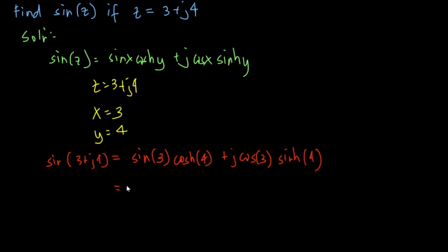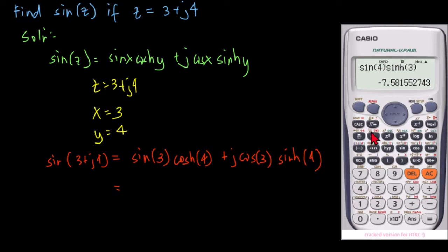From this point we will be using our calculator. So let's just use our calculator. Set our calculator into radians, so that will be sin 3 hyperbolic cos 4. So this is equal to 3.85. We have here 3.85, then plus.